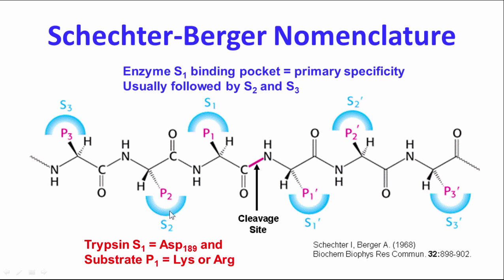Notice that there are other binding pockets as well: an S2 pocket for residue P2, an S3 pocket for P3, and also S1', S2', and S3' pockets on the other side of the cleavage site. The enzyme makes multiple contacts with its substrate, varying primarily at these different side chain residues, which gives it its specificity. If trypsin binds much better at subsites P3 and P2, it will cleave faster when those subsite binding positions are favorably occupied — so the enzyme doesn't rely on just the P1 position alone.